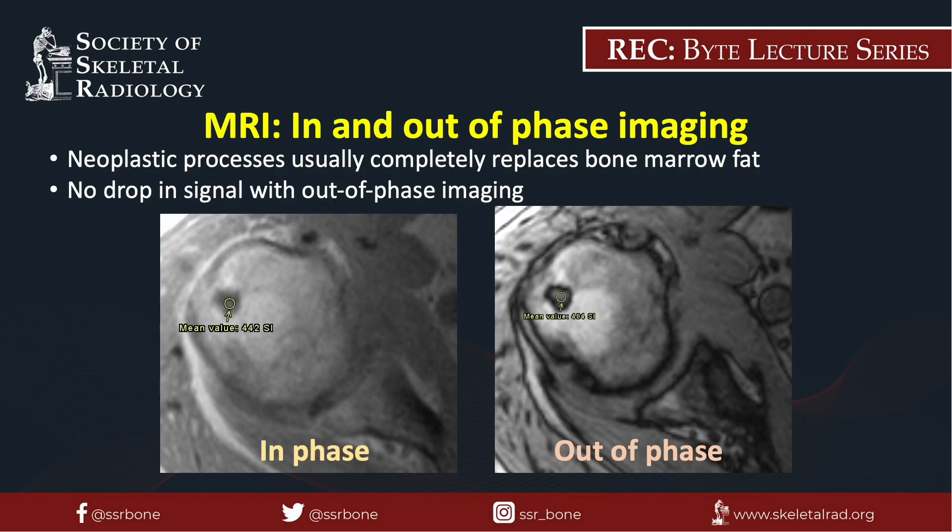On this MRI of the shoulder, there is a small lesion within the humeral head that does not drop in signal on the out-of-phase image relative to the in-phase image. This patient has known metastatic lung cancer to the bone and this lesion is presumed to be a metastasis.